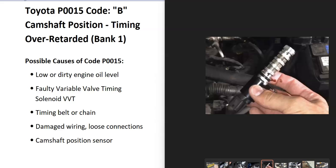Today I'm talking about a Toyota with the P0015 code — what it is and how you go about fixing it. The P0015 is a B camshaft position timing over-retarded bank one. The onboard computer is seeing an issue with the timing; the 'B' stands for the exhaust side, and bank one is always the side with the number one cylinder. On a four-cylinder it wouldn't matter, but on a V6 or V8 you'd want to locate the number one cylinder — that's the side where the issue is being seen.